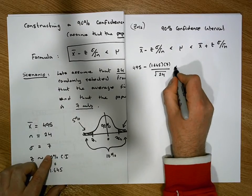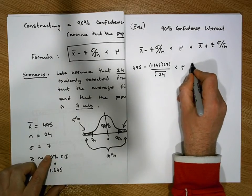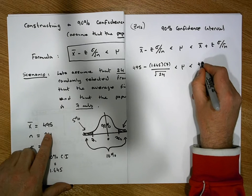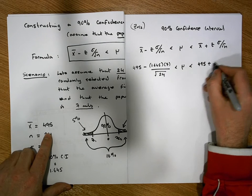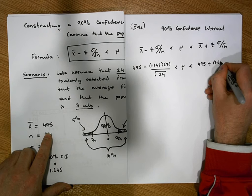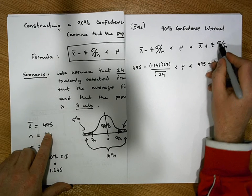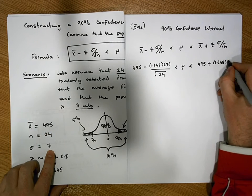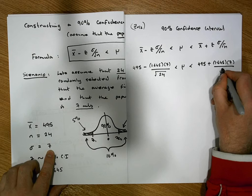That must be less than the population mean, which must be less than x-bar, which is 495, plus z, which is 1.645, times sigma, which is 7, divided by the square root of 24.